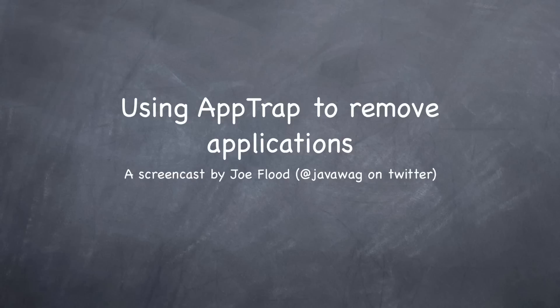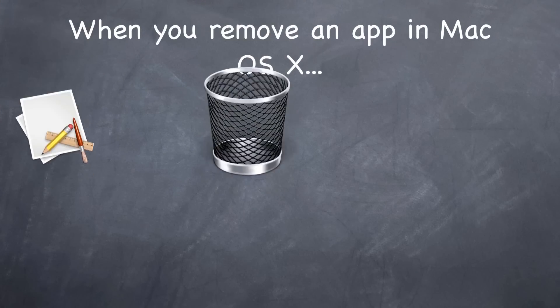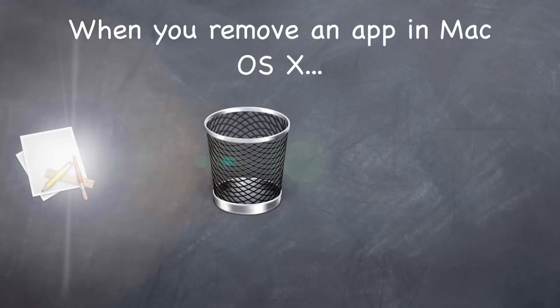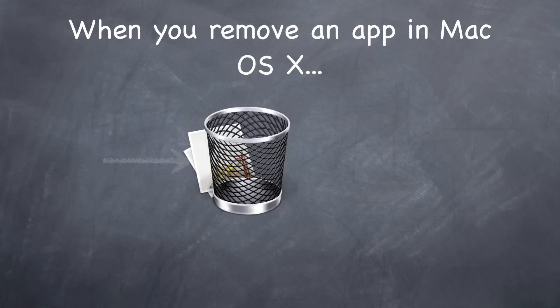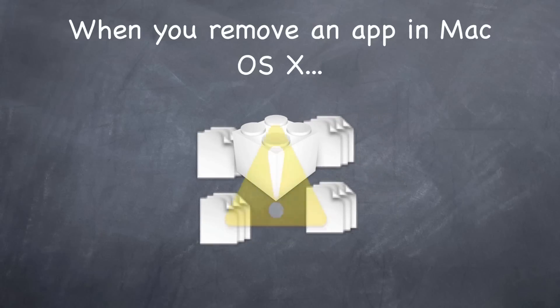This is my first screencast about using AppTrap to remove applications. When you remove an application from your computer in Mac OS X using the trash, it can leave behind all sorts of files such as preferences, plugins, documents — loads of stuff. So there are a couple of different applications you can use to get rid of these files.